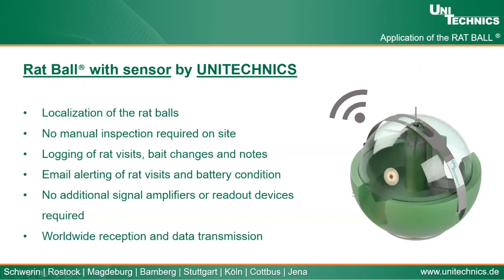Besides the normal version of the Rat Ball, we also have a version with a sensor. The sensor allows us to localize where our Rat Ball is in the city without any manual inspection on site. Rat visits and bait changes are logged automatically and sent by email, so we know every time there are rat visits or when the sensor battery needs changing. The transmission of the signal doesn't require any amplifiers or readout devices, and no matter where you are in the world you can always receive this transmission.